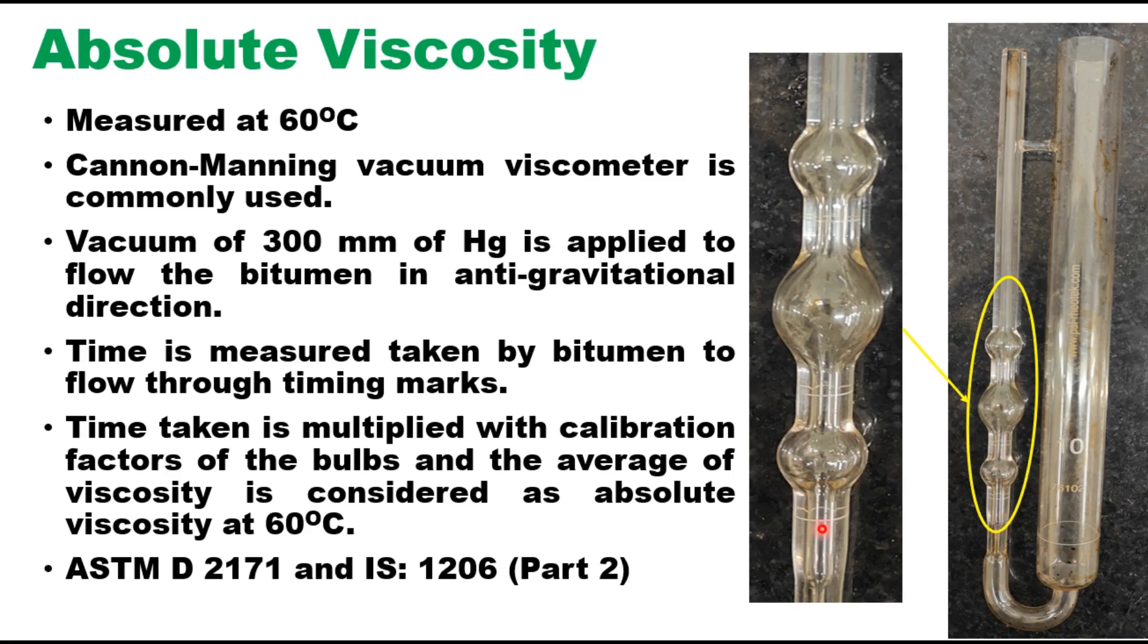So these are three points important. This is one mark, second mark and third mark. And time is measured taken by the bitumen to flow through these timing marks. This time is then multiplied by the calibration factor of the bulb and the average of viscosity is considered as the absolute viscosity at 60 degree centigrade.